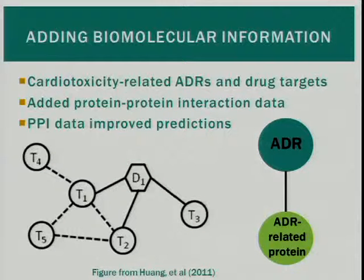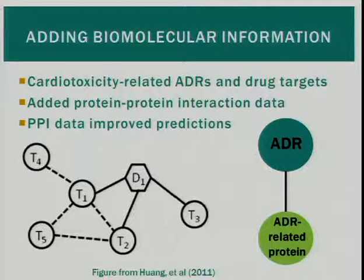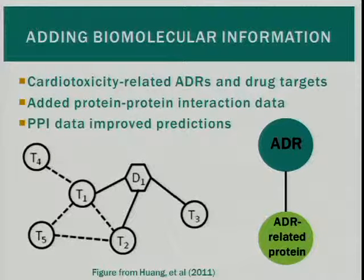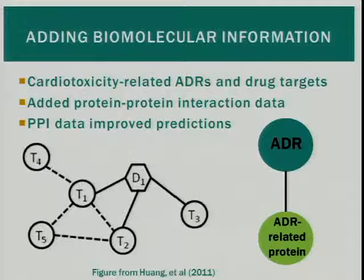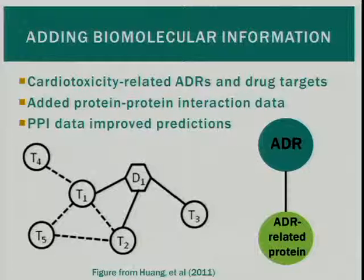What about true systems information, like protein-protein interaction data? I was really surprised to find that it hasn't been used much in this problem yet. One of the only examples is by Wang et al., who created a network connecting drugs and targets but expanded their target network to include all other proteins that a target protein interacts with. They found that including this information improved their machine learning predictions. There was also a group that created a network of adverse drug reactions connected to protein targets and started expanding with protein-protein interactions, but it wasn't connected to the drug — so it wasn't actually in the realm of predictive models for ADRs.